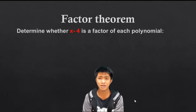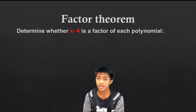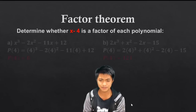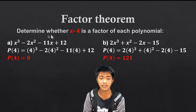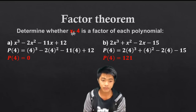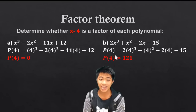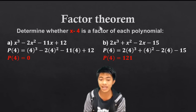What about the factor theorem? The factor theorem says that if you use the remainder theorem and the remainder is zero, then the divisor is a factor of the polynomial. But if there is a remainder, then the divisor is not a factor. For example: determine whether x minus 4 is a factor of each polynomial. When we substituted 4 into polynomial A, the remainder is zero — therefore, x minus 4 is a factor. When we substituted 4 into polynomial B, the remainder is 121 — so x minus 4 is not a factor.